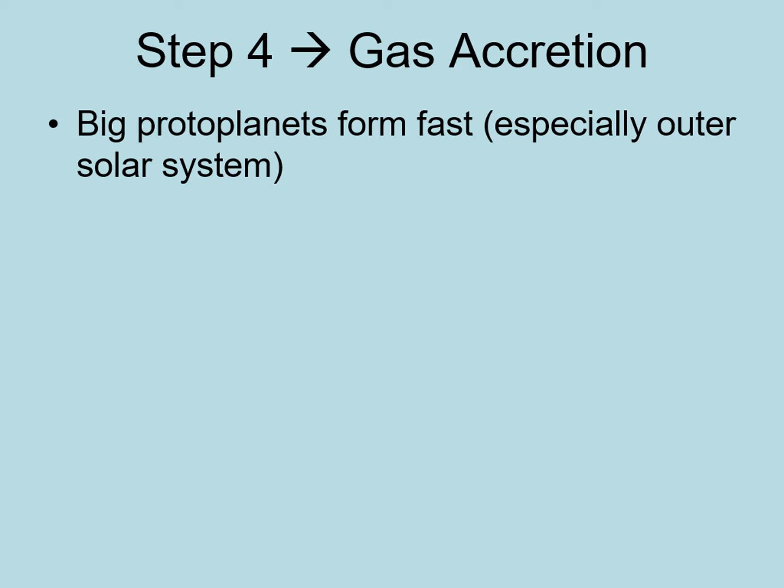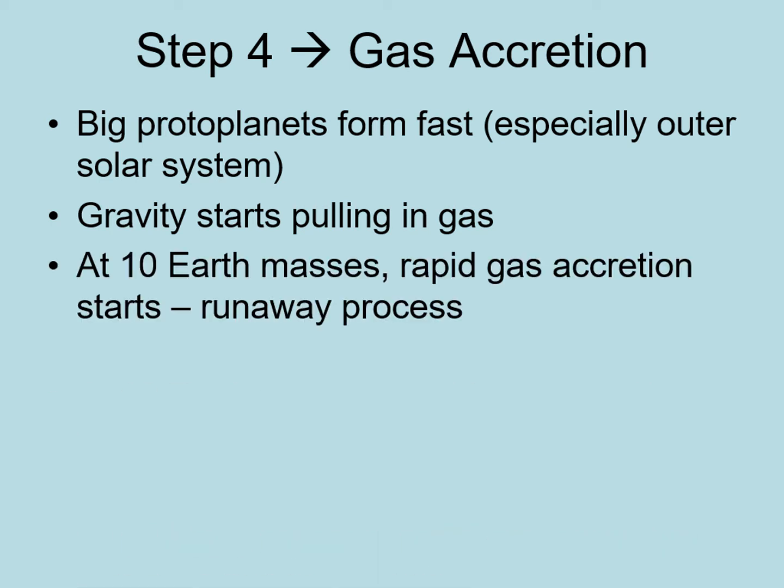However, as these protoplanets made of rock, metal, and ices got much larger than the mass of the Earth, their gravitational pull got large enough that they could begin holding onto the gas that made up roughly 98% of the disk. At first, a growing protoplanet only captures a little bit of this gas. But once it reaches a mass of about 10 Earth masses, it's able to pull in more gas than rock and ice. From this point on, gases dominate its accretion, and it can grow to many times its original size.